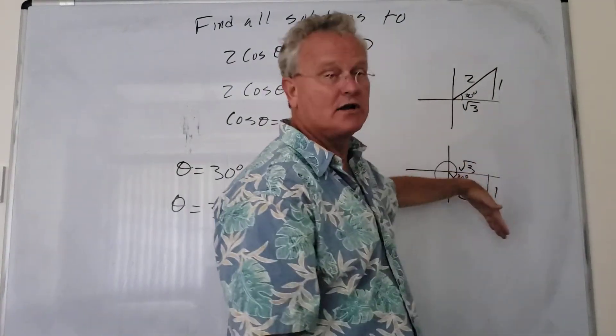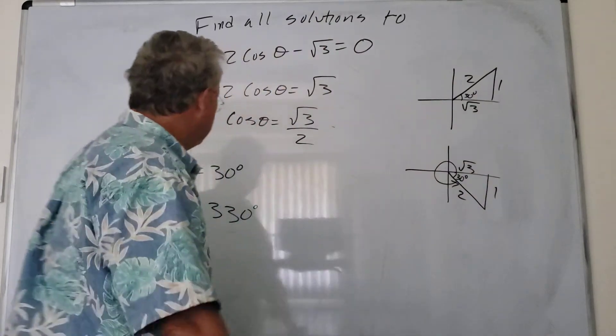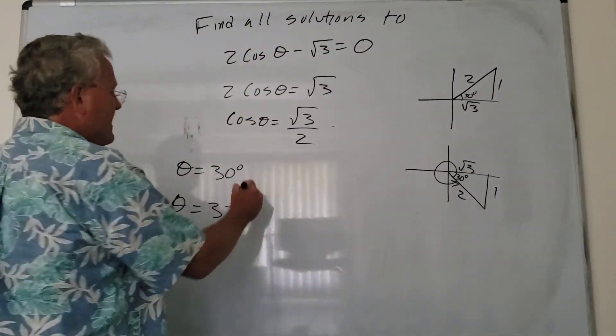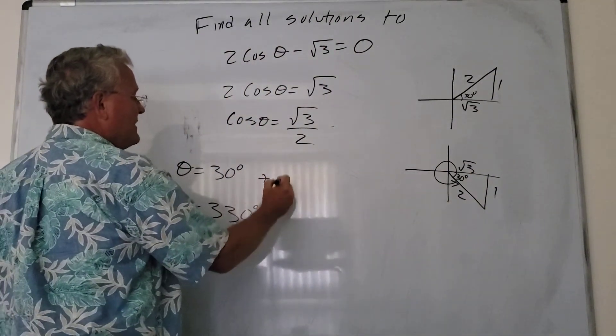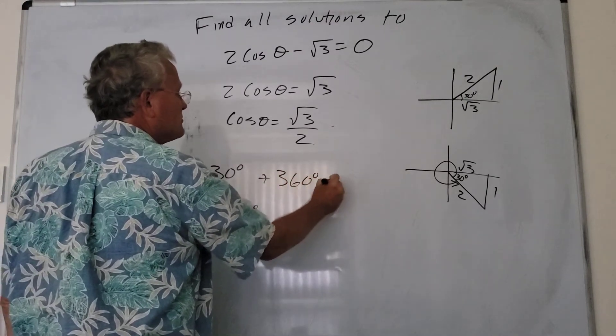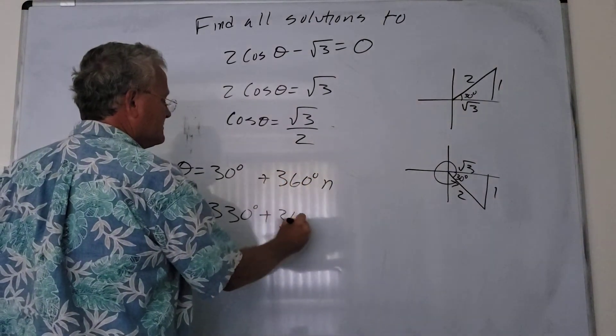So when we add any integer multiple of 360 to either one of these, it's going to bring us right back to essentially the same angle. So we want to add any integer multiple of 360 degrees.